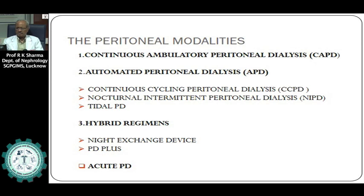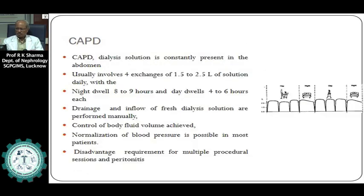Peritoneal dialysis is another form of dialysis in which the body's peritoneum acts as a semi-permeable membrane. A peritoneal dialysis catheter is placed inside the abdomen and fluid is instilled three to four times every day in 24 hours. Across the peritoneal membrane, movement of solutes, water, and salt occurs, and the fluid placed in the peritoneal cavity is then discarded. Across this natural semi-permeable peritoneal membrane, both diffusion and ultrafiltration take place.